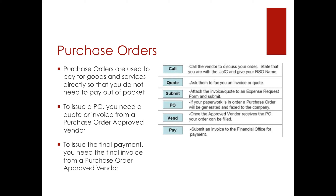The purchase order process is simple. First, select a vendor from the approved vendor list, and then call that vendor to discuss your order. Be sure to state that you are with the University of Chicago and give your RSO's name. Ask them to fax you an invoice or quote. Submit that invoice or quote to a purchase request within Blueprint and submit. If the paperwork is in order, a purchase order will be generated and faxed to the company, at which point the approved vendor will receive the PO and fill your order. When they have filled your order, they will give you a final invoice. Submit that invoice to the financial office for payment.